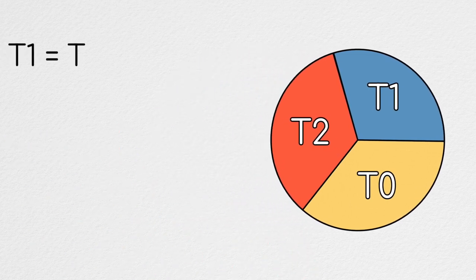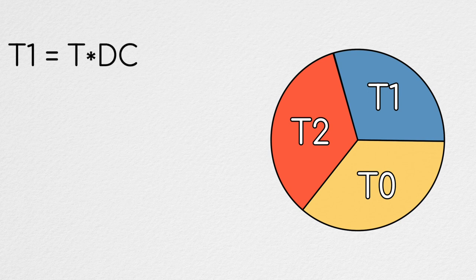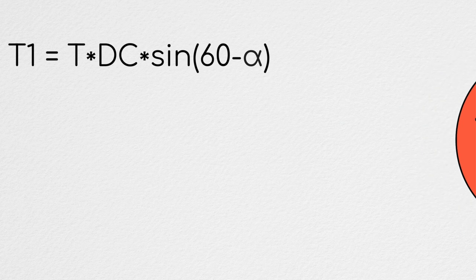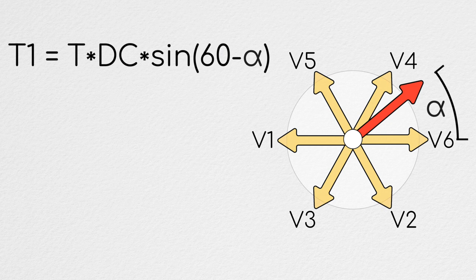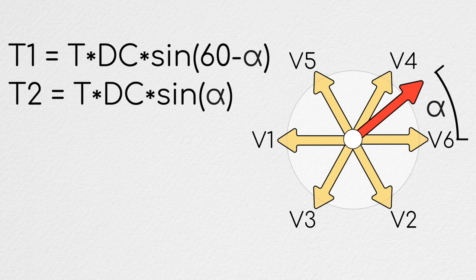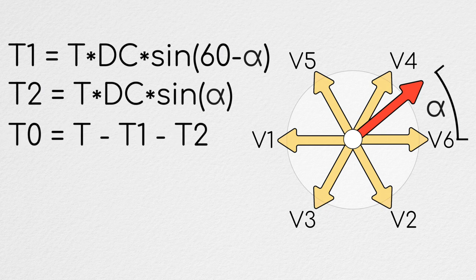T1 will be equal to your PWM period in seconds times your duty cycle times the sine of 60 minus the angle alpha. This alpha value is how far your desired vector is past the vector in which you will spend T1. Mathematically, this can be easily calculated by finding the remainder of your desired vector angle divided by 60. T2 will then be equal to your PWM period, again in seconds, times your duty cycle times the sine of alpha. And finally, T0, which is the time you'll spend in your null vector, is equal to your total period T in seconds minus T1 and T2.